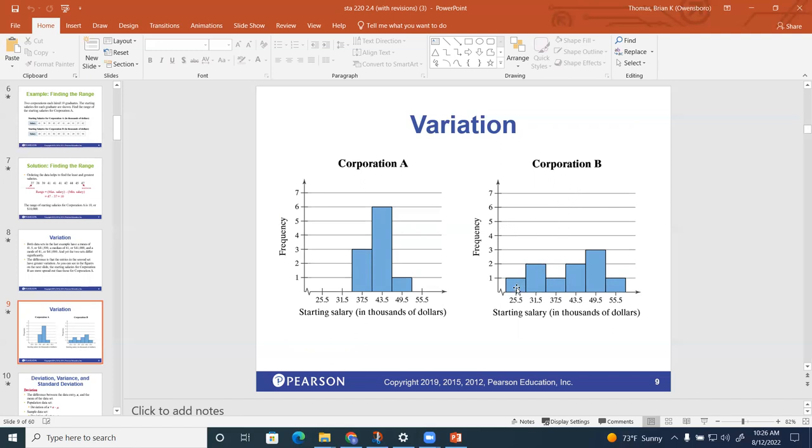there's a risk of getting paid much, much less. And there's also a chance that you can get paid much, much more. The salaries are more distributed, more spread out, where corporation A, everything is more compact. So there is a big difference in how the data is. It varies greatly in corporation B, where it's really tightly connected in corporation A.